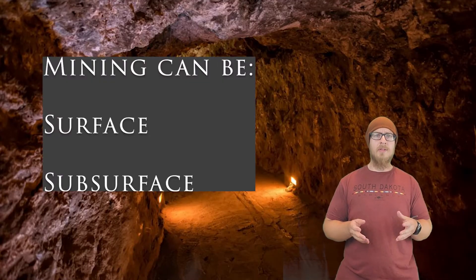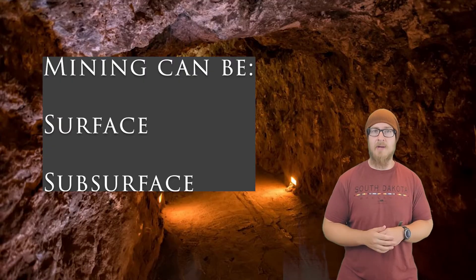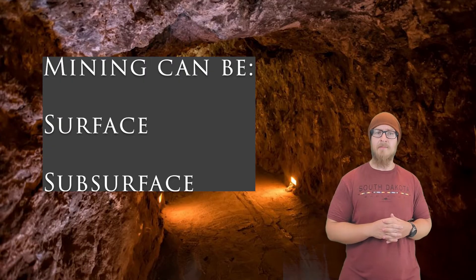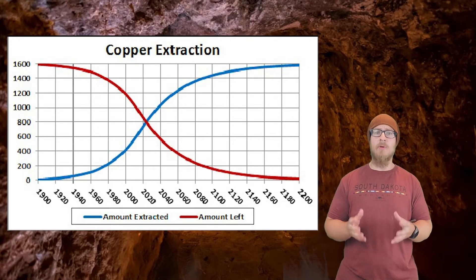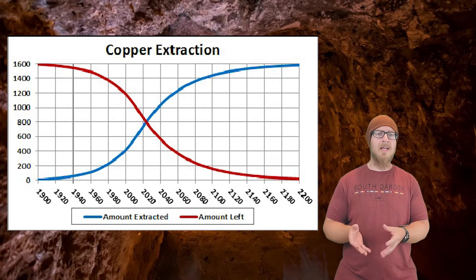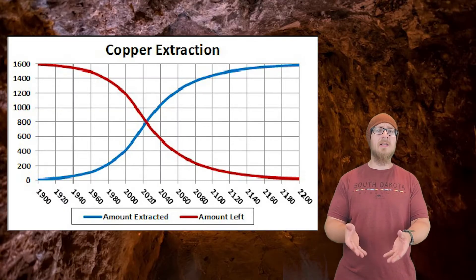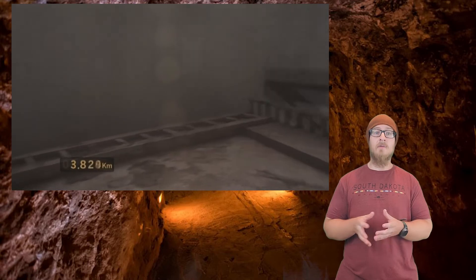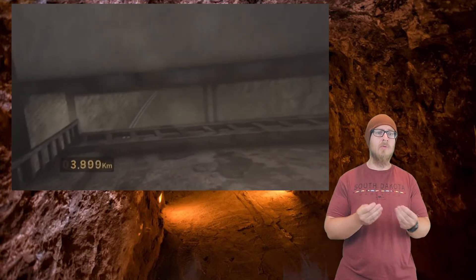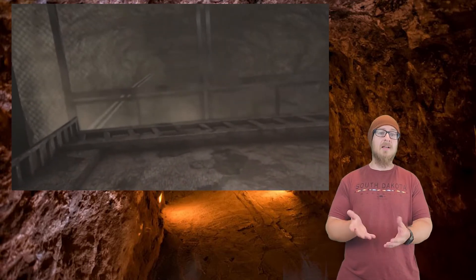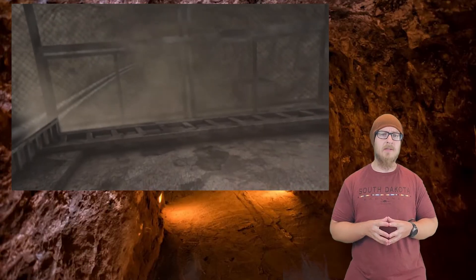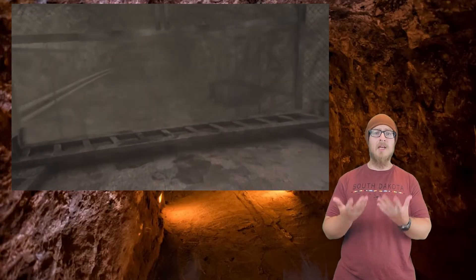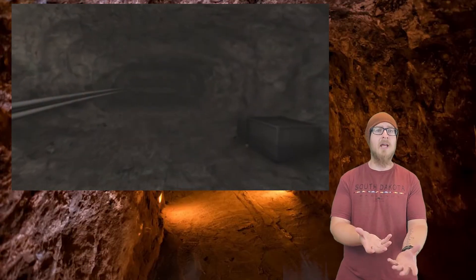In general, there are two broad types of mining: surface mining and subsurface mining. As the more accessible ores on the surface are mined, mining operations resort to harder-to-get-to mines underground. Underground mining involves drilling a series of tunnels so workers and machinery can access the underground deposits. This is considered very dangerous, as the rock above can become unstable and collapse.